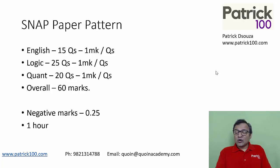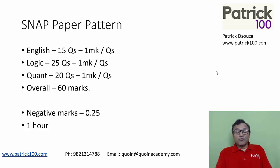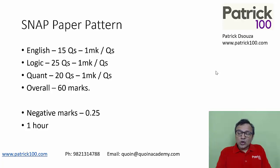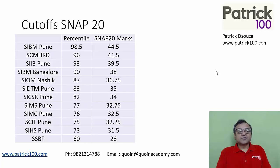In the SNAP exam, there is no sectional cutoff — it's an overall cutoff. So you need to focus on overall marks. Maybe your quant is strong, but if you're getting more marks in English per minute, it's better to focus on English. Your strategy will change in the examination because there's no sectional cutoff — you only need to focus on overall marks.